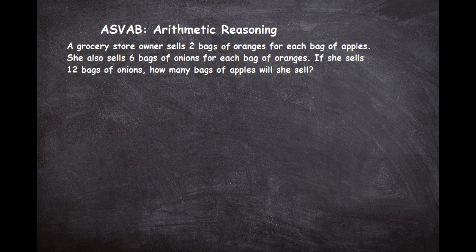Looking at the first part, we have two bags of oranges for each bag of apples, so we're doing double the amount of oranges for the apples — apples are the smaller amount. We'll let x equal the number of apples. The reason is the apples are the lower quantity: she's selling six bags of onions for the oranges and two bags of oranges for the apples. Choosing the lower quantity avoids dealing with fractions when solving.